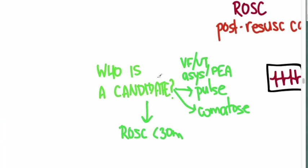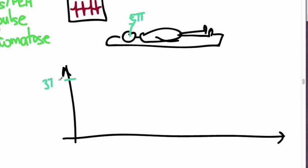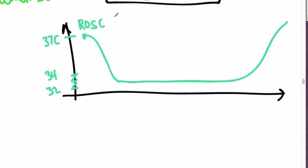So let's talk about how to do this. First, let's make a graph with temperature being on one axis and time on another. So the normal temp is about 37 degrees Celsius. And remember, our goal is to hit somewhere between 32 and 34. And so we're going to start after the return of spontaneous circulation here and we're going to get our patient down to that goal temperature and keep them there for about 12 to 24 hours.